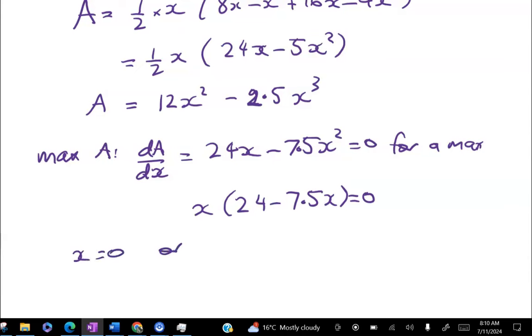Solving this quadratic, I get x(24 - 7.5x) = 0. So x = 0, or 24 - 7.5x = 0. So 7.5x = 24, which gives me 24/7.5, which gives me x = 3.2.